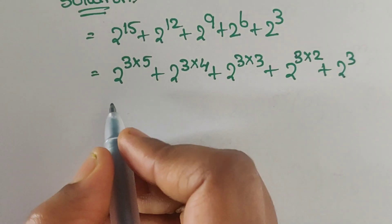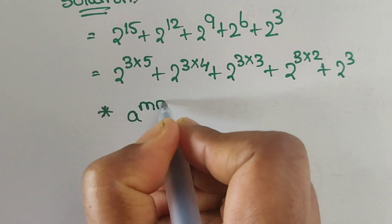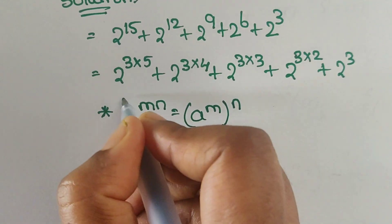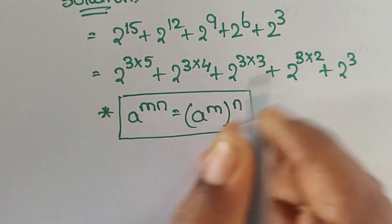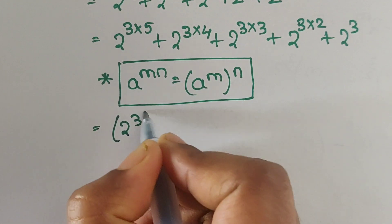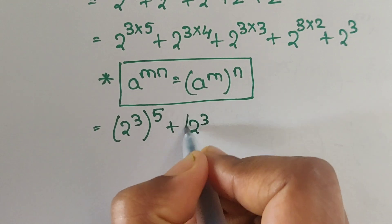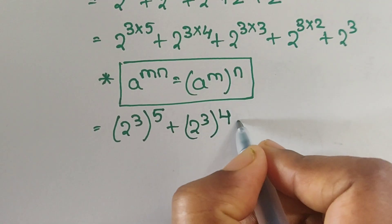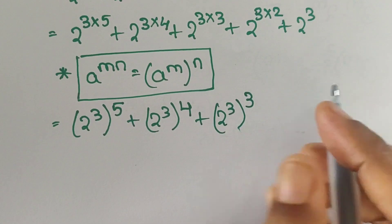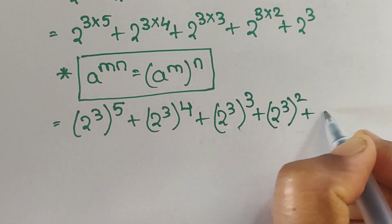Now here we can apply the formula: a to the power of m times n equals a to the power of m, whole to the power of n. Using this formula, we can write: (2 power 3) whole to the power of 5, plus (2 power 3) whole to the power of 4, plus (2 power 3) whole to the power of 3, plus (2 power 3) whole to the power of 2, plus 2 cube.